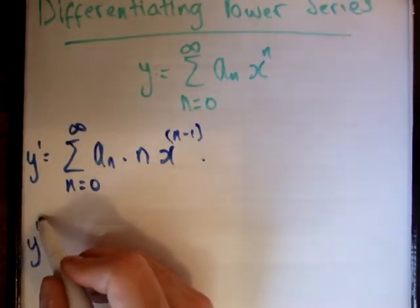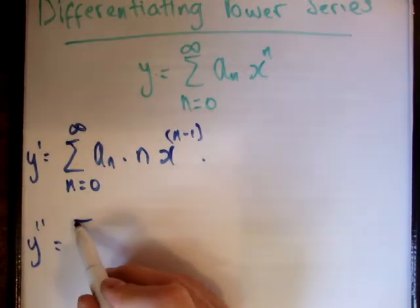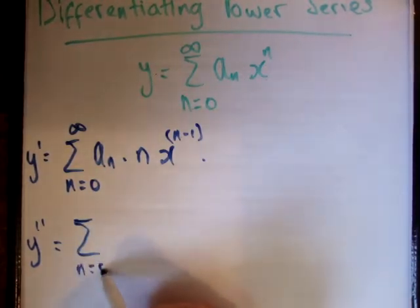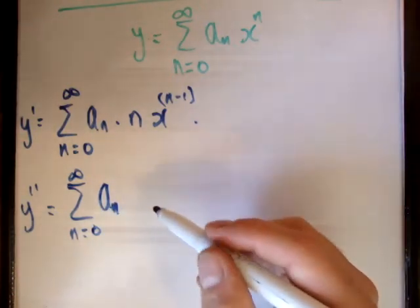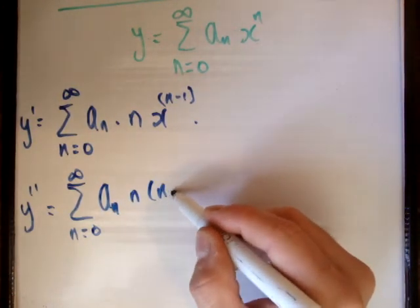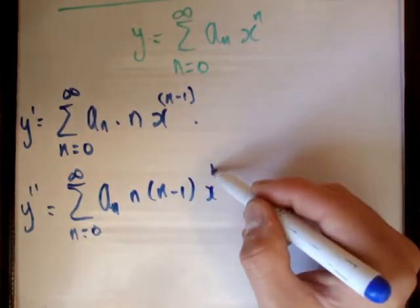So let's differentiate it again to get y double prime. Once again, this section of it does not change. We have a sub n times n, n minus 1, x to the n minus 2.